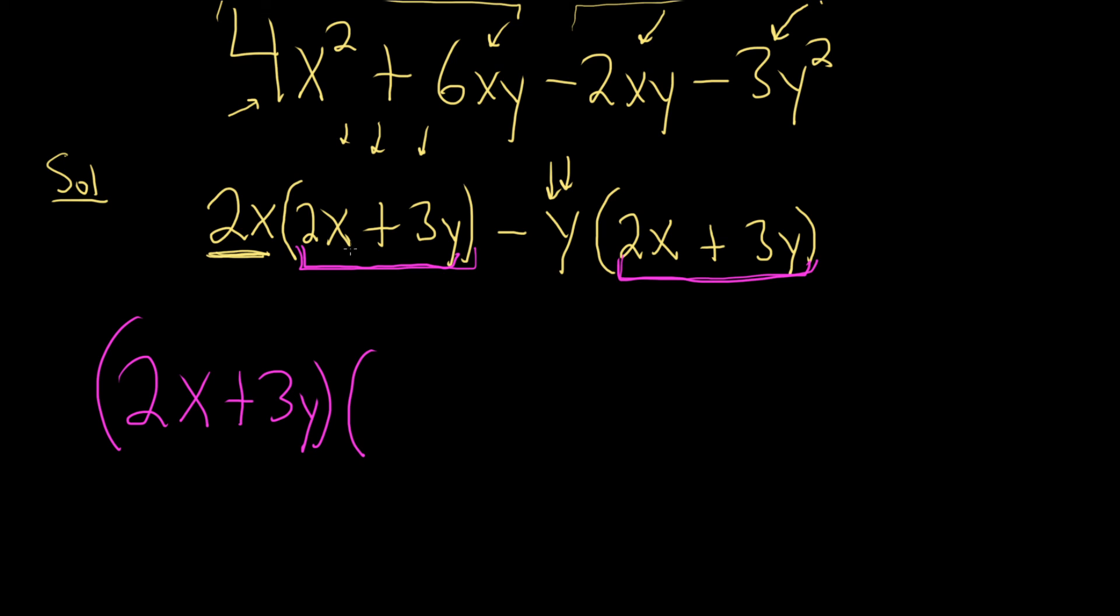And then you ask the question again, what is it that you multiply by 2x plus 3y in order to get this piece here? Well, you're missing a 2x, so you write down what's missing, so 2x. And then one more time, what do you multiply by 2x plus 3y in order to get whatever is here? Well, you're missing a y, so you write down the y. And that would be the final answer we have successfully factored by grouping. Good luck.